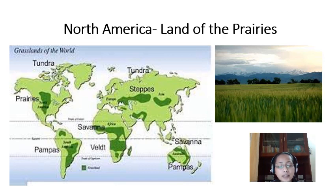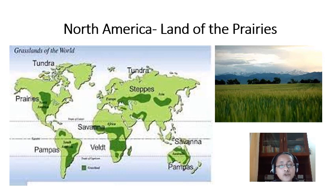Tall grass up to two meters high dominates the landscape — it is actually a sea of grass. The prairies are bound by the Rocky Mountains in the west and the Great Lakes in the east. Looking at the map of North America, you can see that the prairies cover parts of the United States of America and parts of Canada. In the United States, the area is drained by the tributaries of the Mississippi, and the Canadian prairies are drained by the tributaries of the Saskatchewan rivers.